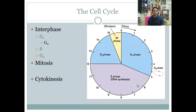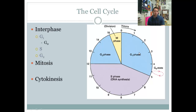Interphase is made up of G1, S, and G2. During this 90% of the cell's life, it's carrying on general life functions. In G1, it's metabolizing things, breaking down waste, creating proteins and enzymes, and transporting vesicles to different places. You know what a cell does metabolically — what it has to accomplish to stay alive through photosynthesis and cellular respiration.